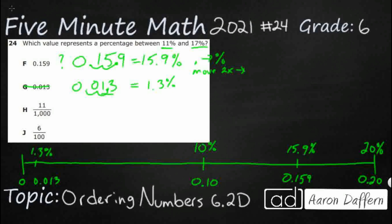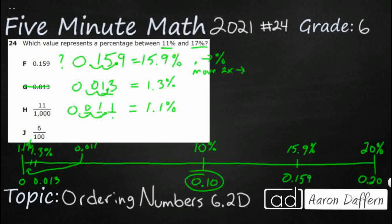Let's check the fraction 11 thousandths. I can write that out — tenths, hundredths, thousandths — so 11 thousandths is 0.011. Unfortunately, it's very similar to G: it has one too many decimal spots. Move the decimal over once, twice, and I get 1.1%. So that goes right here on the number line — 0.011 equals 1.1% — and it's not within the range I need, which is between 11% and 17%.